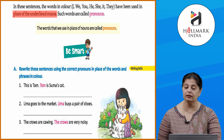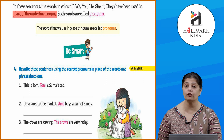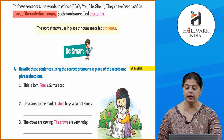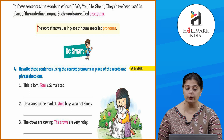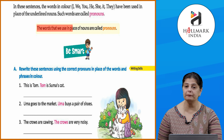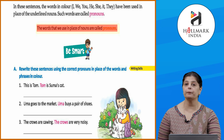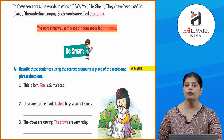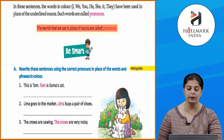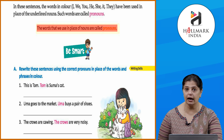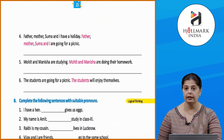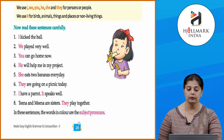In these sentences, the words in color — I, we, you, he, she, it, they — have been used in place of the underlined nouns. Such words are called pronouns. The words that we use in place of nouns are called pronouns. Now let's quickly do the exercise to understand what you have learned.